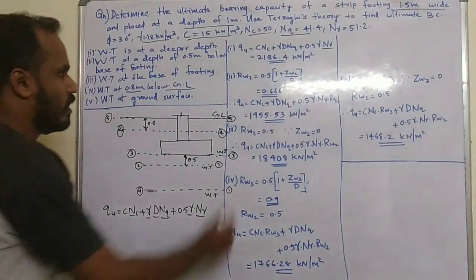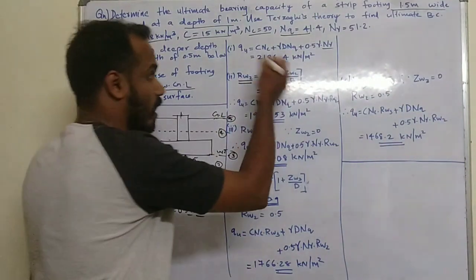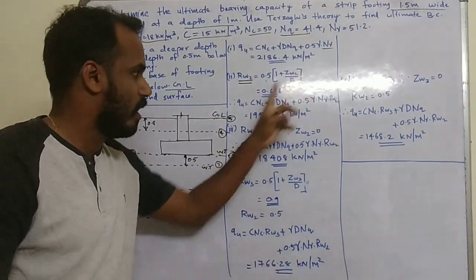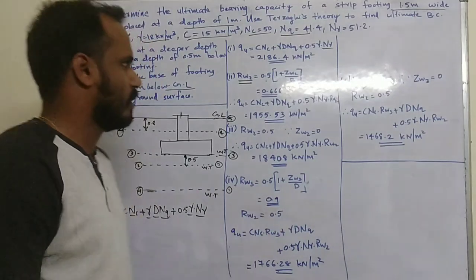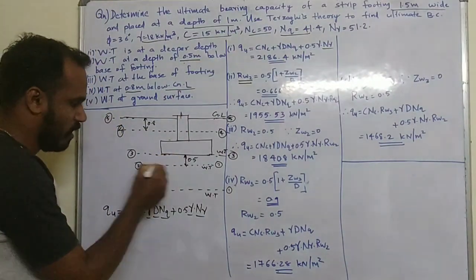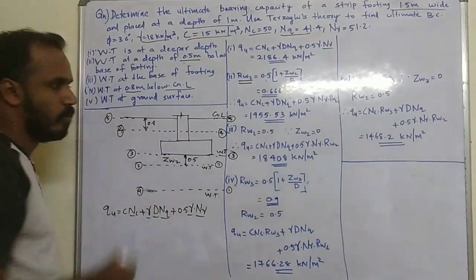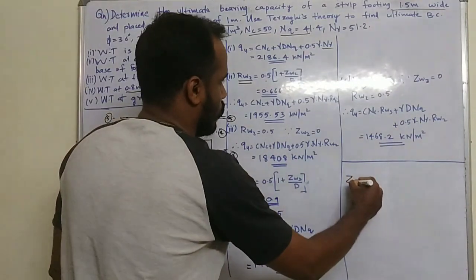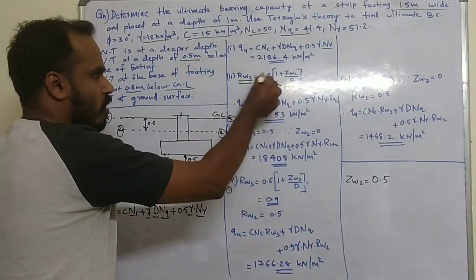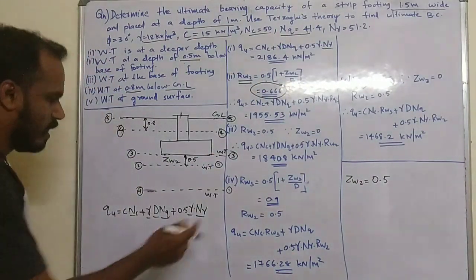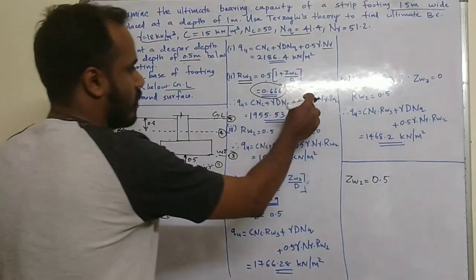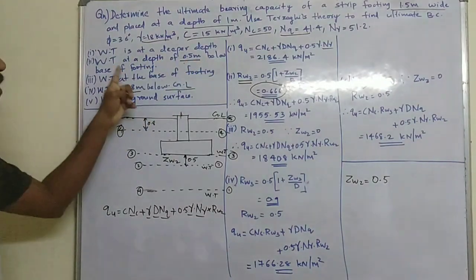For Condition 2, the correction factor Rw2 applies. The formula is 0.5 × (1 plus Zw2 divided by B). Here Rw2 applies to the last term, and Rw3 applies to the first term. Condition 2 has the water table 0.5 m below the base of the footing, so Zw2 = 0.5 m.